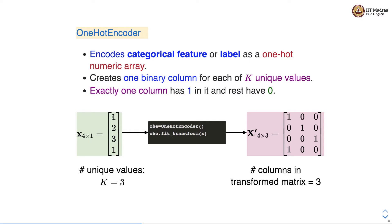You can see that the first sample and the last sample have value 1, so you see 1 in the first and last sample in the first column. The second sample has value 2, so the column corresponding to 2 is 1 and the rest are 0. For the third sample the value is 3, and you will see 1 in the third column which corresponds to value 3.